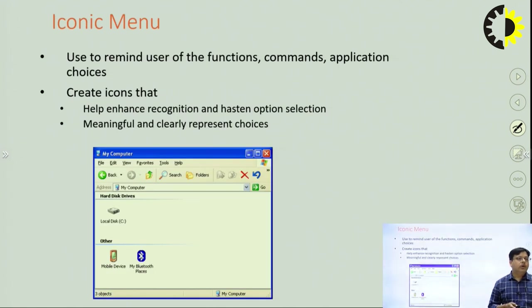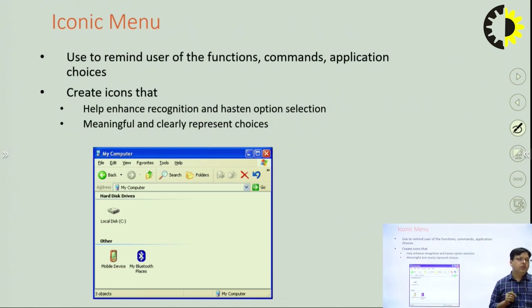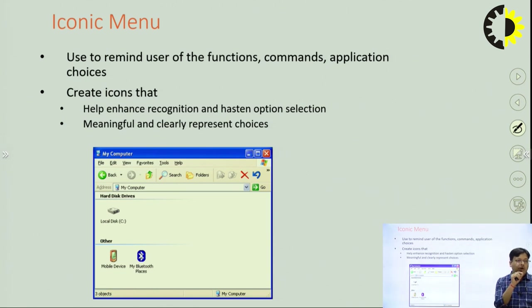The final category is iconic menus, used to remind users of functions, commands, and application choices. We use symbols — icons — that help enhance recognition of menu options by selecting meaningful, clear, representative choices. For example, a computer icon represents 'My Computer'; when we see the symbol, we know what it represents. Similarly, specific icons are used for Bluetooth, Wi-Fi, mobile devices, and network — these kinds of menus are called iconic menus. Thank you.